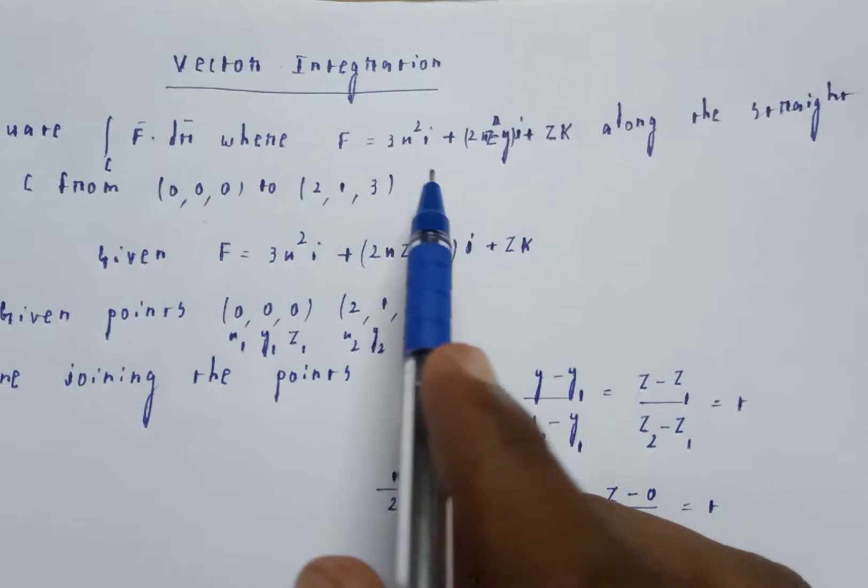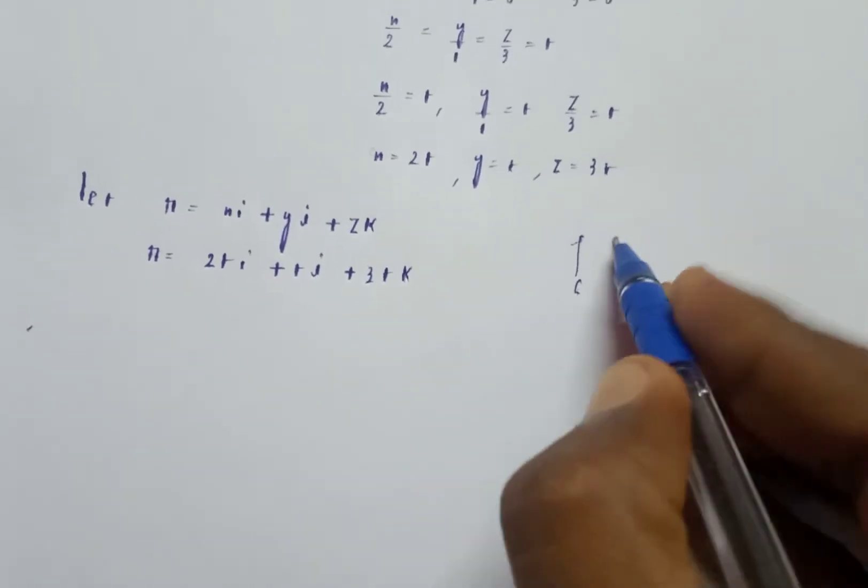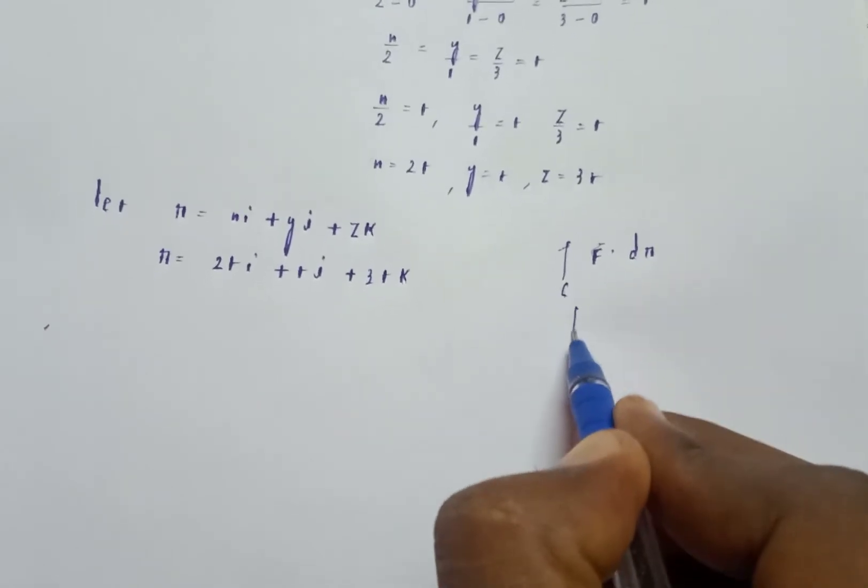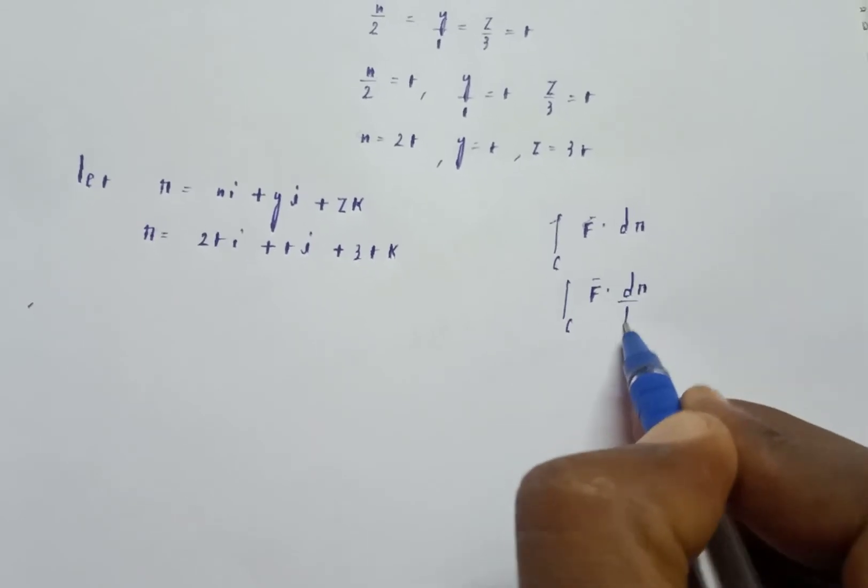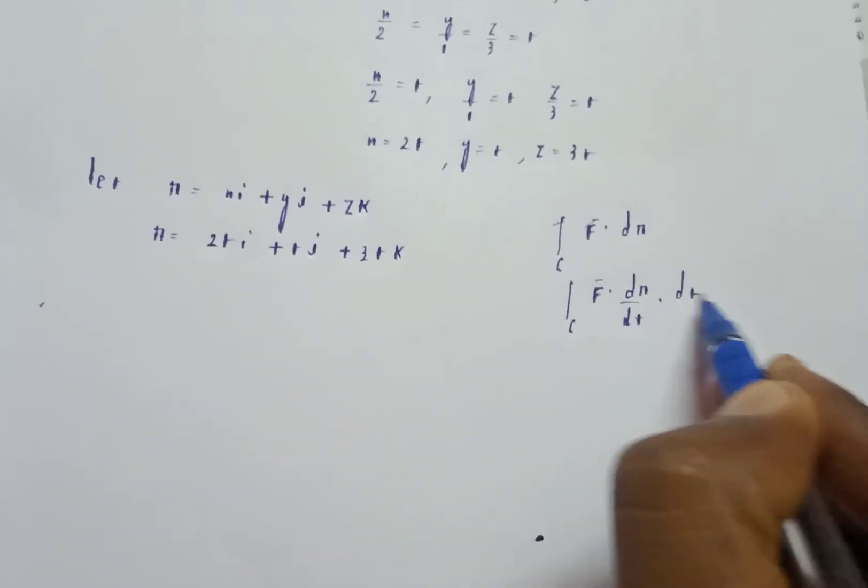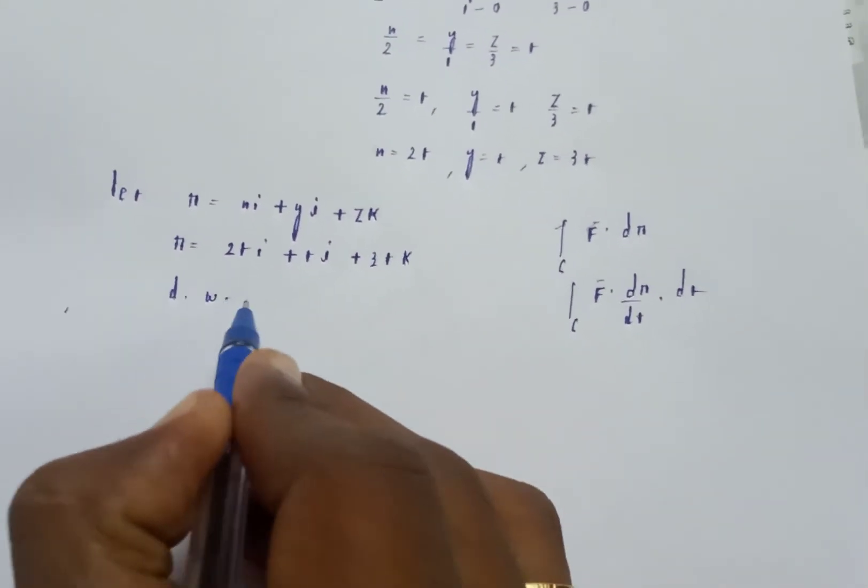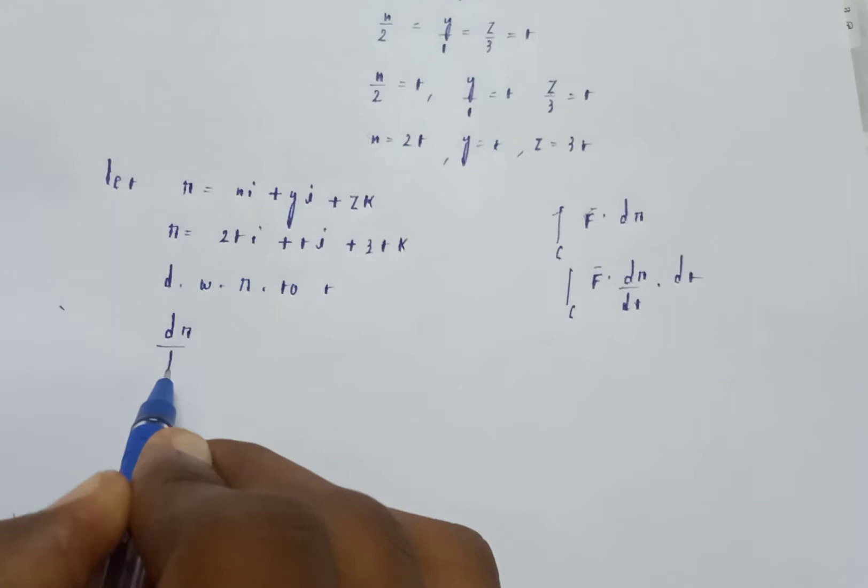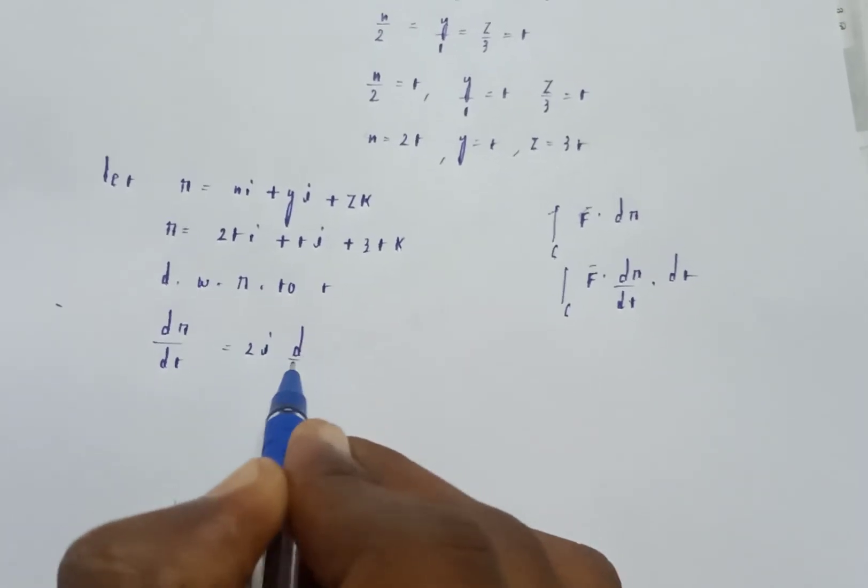To evaluate integral C F bar dot dr bar, we write it as integral C F bar dot (dr by dt) dt. We need differentiation with respect to t.